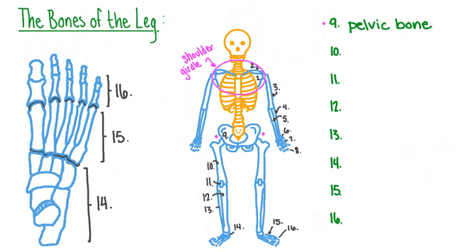The pelvic bones are two large, irregular flat bones with a shape that reminds some people of a human ear. The upper part of the pelvic bone is called the ilium — you might be able to feel your iliac crest if you press down on the upper outer part of your hips. The lower part of the pelvic bone, the part you sit on, is called the ischium. The pelvic bones are attached at the hip joint to the femur, the largest and strongest bone in the human body, which stretches from the hip to the knee.